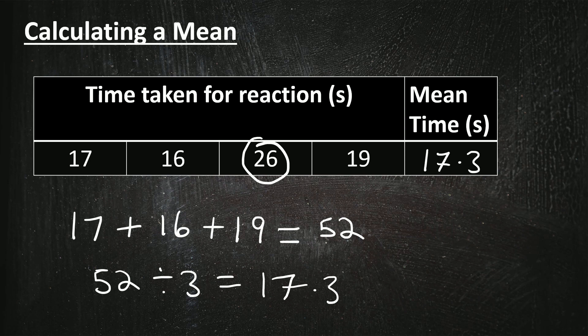Now if you did include all four results and added them up and divided by four, you'd still get one mark. But it's really important you get both marks, so do look out for that anomaly and make sure you don't include it in your calculation.